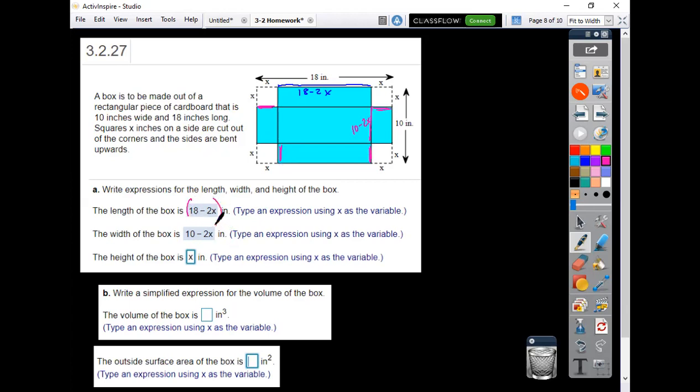So after you do that, then part b: what is the volume? You need to multiply those three out. So if I take the 18 minus 2x, the length, times the 10 minus 2x, the width, first I'll give me the area of this base. So that would be 18 times 10 is 180.